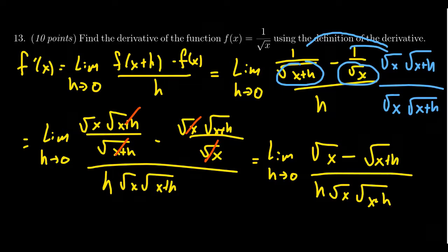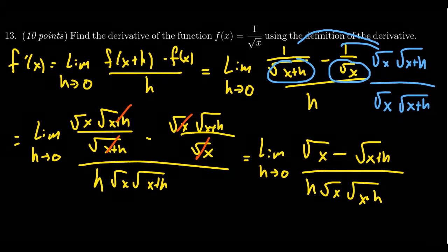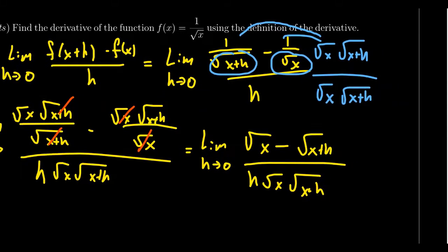Don't be tempted to cancel out the square root of x from the top and bottom, because it's not a common factor across the entire numerator — not everything in the numerator is divisible by the square root of x. The same thing applies to the square root of x plus h. In order to proceed, since we have a square root of x and a square root of x plus h in the numerator, the advice is to rationalize the numerator.